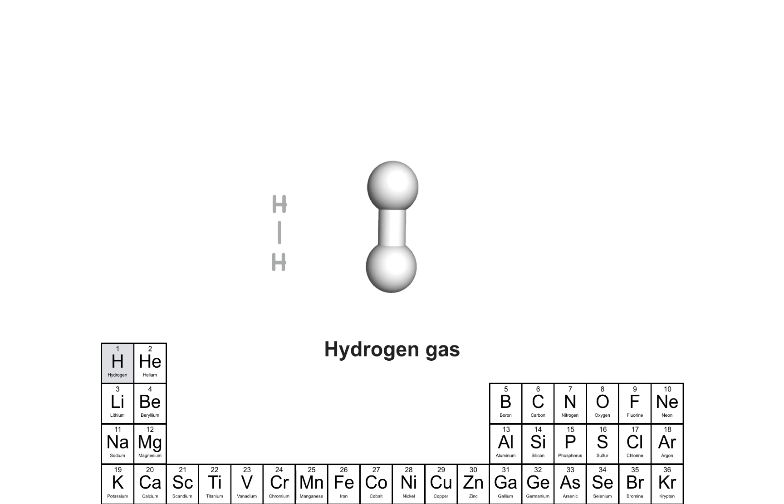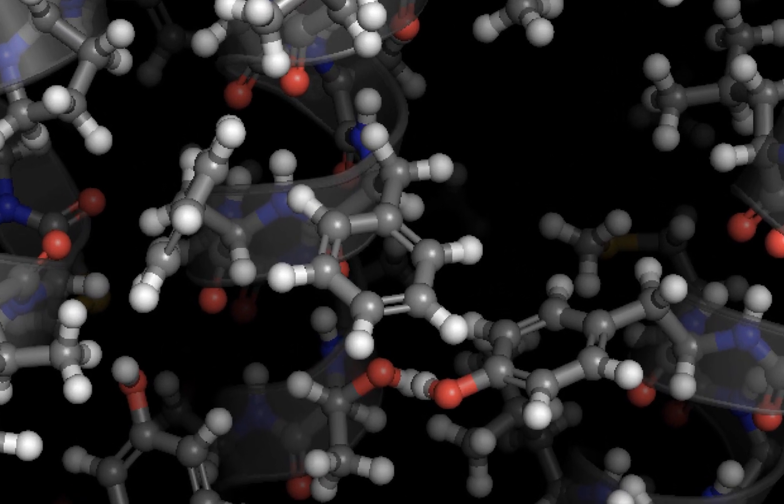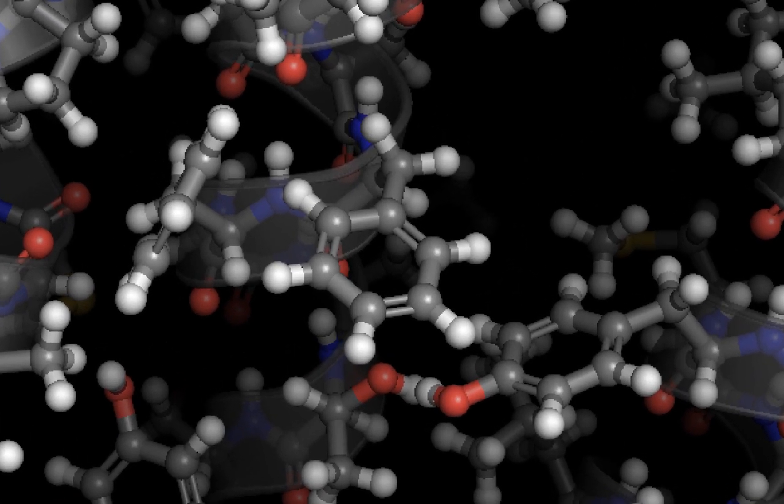Looking back at our rhodopsin structure, we can now focus not on the colors of the atoms, but on the bonds. Every one of those bonds is a shared pair of electrons between two atoms. If we see a double bond, it must be two shared pairs of electrons, or four electrons shared between two atoms.